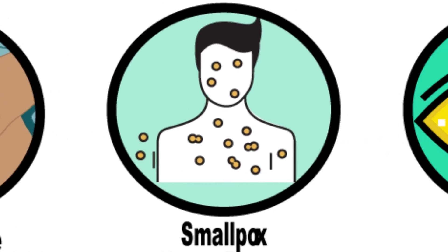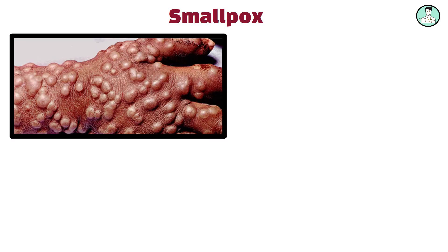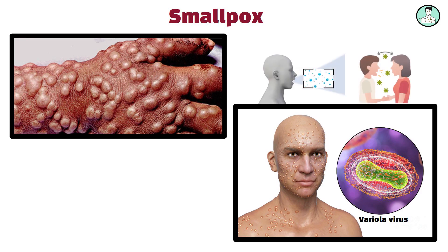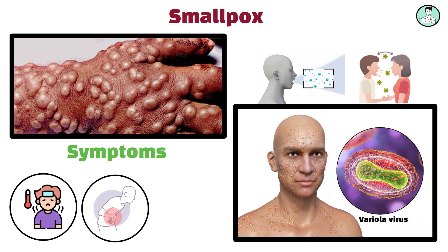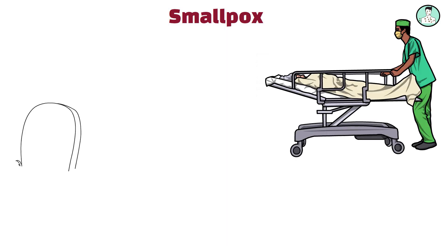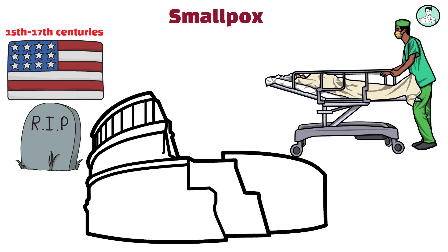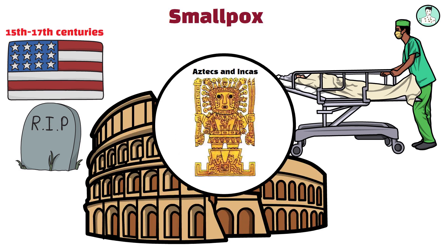Smallpox, 15th to 17th century. Smallpox is a highly contagious viral disease caused by the variola virus. It spreads through respiratory droplets or contact with infected bodily fluids. Symptoms include high fever, body aches, and a distinctive rash that develops into fluid-filled blisters. Smallpox decimated native populations in the Americas during the 15th to 17th centuries, contributing to the collapse of empires like the Aztecs and Incas.